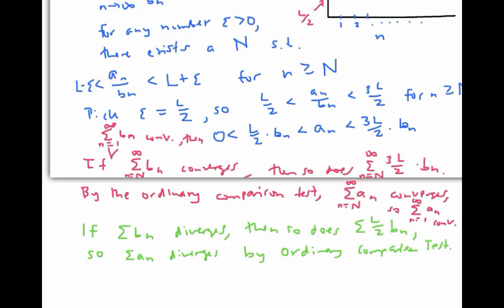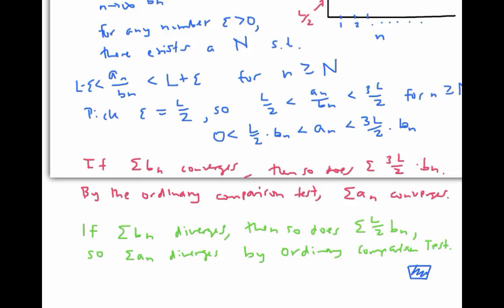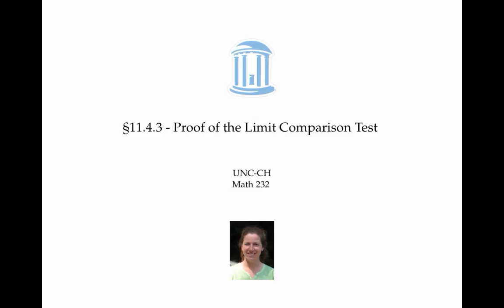We could similarly rewrite the second part of the argument using precise indices as well. We've shown that the sum of the b sub n's and the sum of the a sub n's either both converge or both diverge, and that completes the proof of the theorem. In this video, we proved the limit comparison test using the ordinary comparison test.